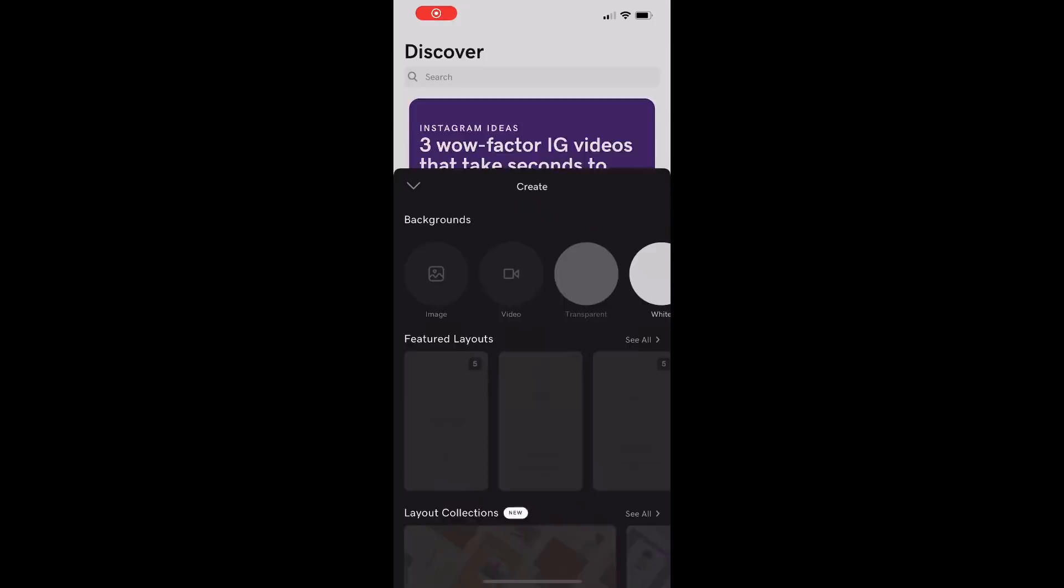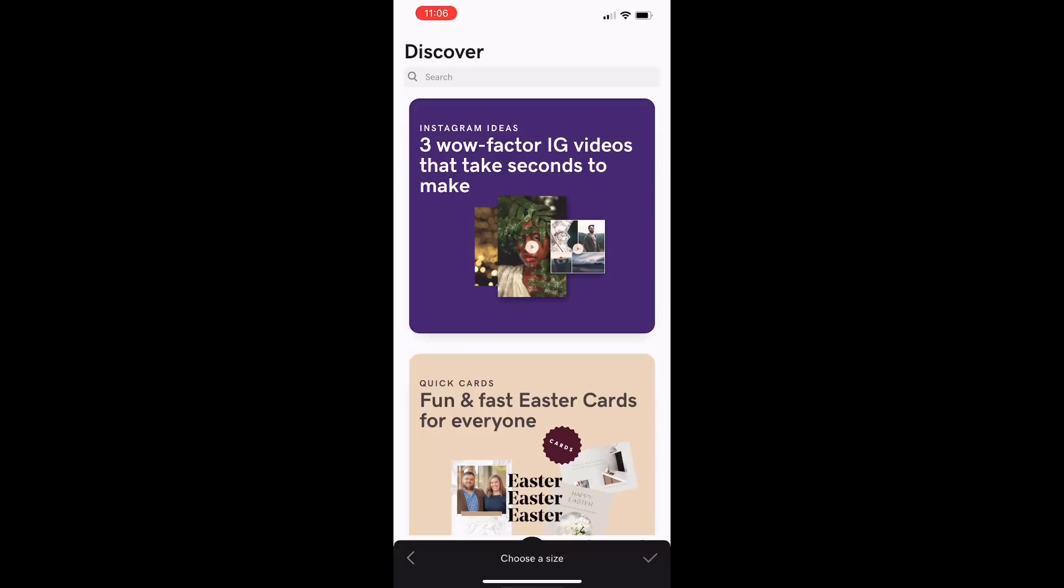While that layer is drying, I'm going to show you guys how I created the name decal for this design using the Over app on my phone. You're just going to go into the app, click the plus sign at the bottom of your screen, then click the transparent option and then click OK.